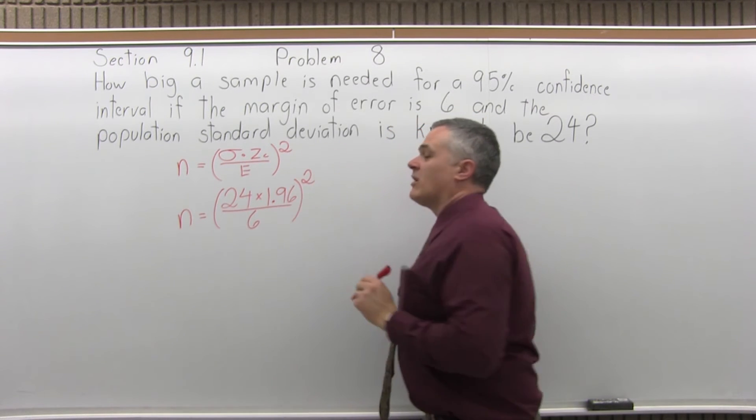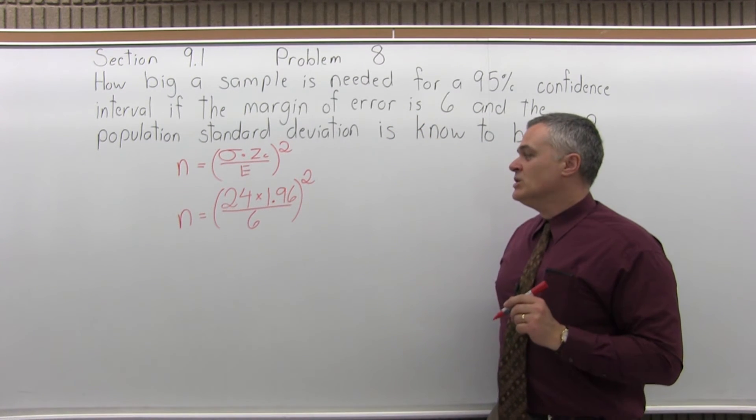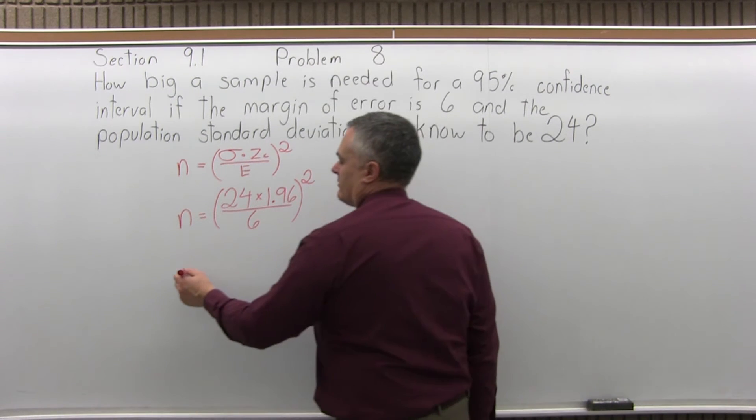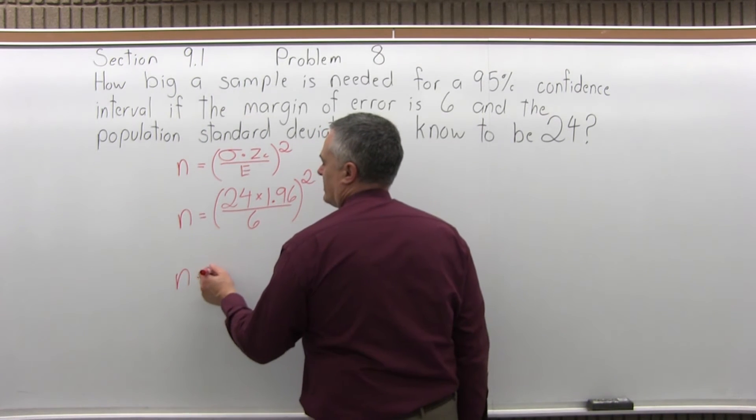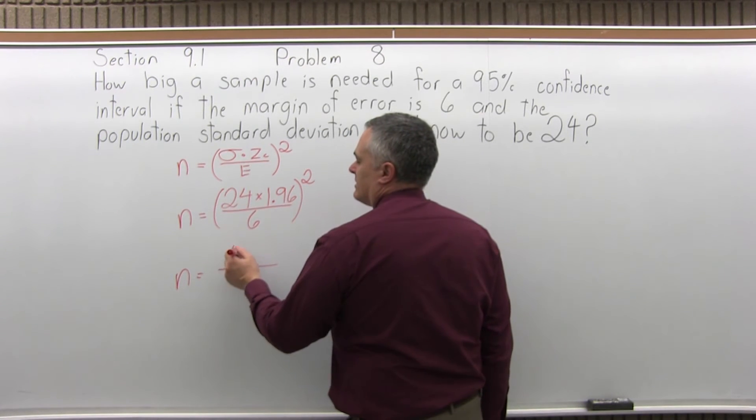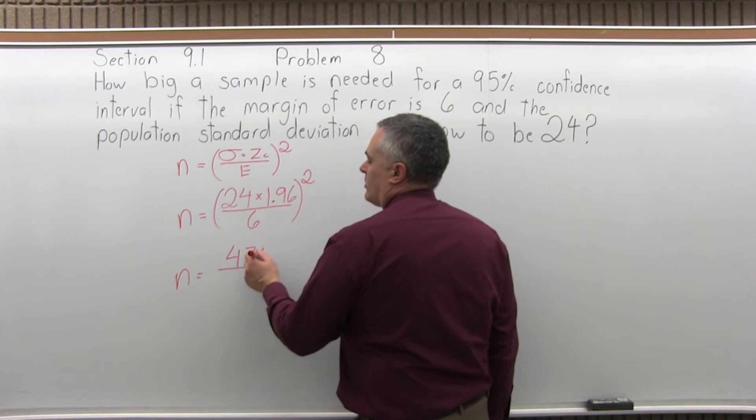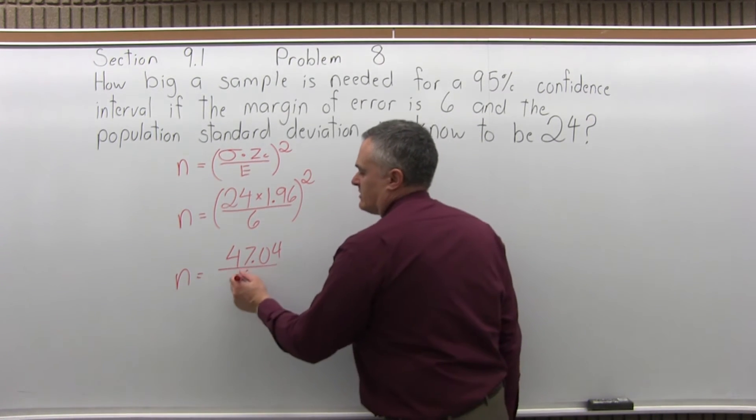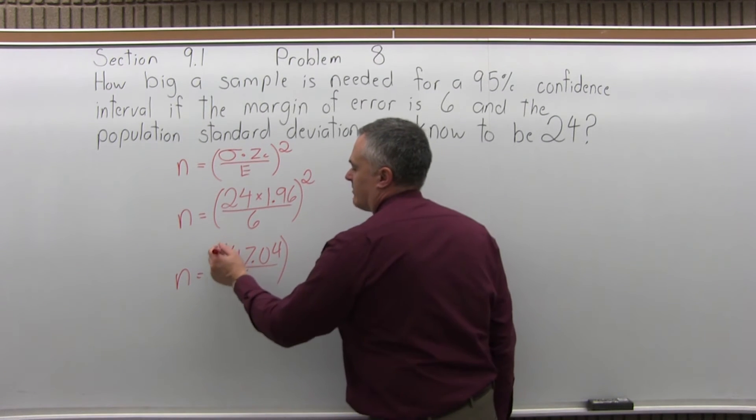Don't forget the second power, a very common mistake. So now to do this, you can do the multiply and divide in a variety of orders. A lot of people just take their calculator and multiply going across the top. 24 times 1.96 will be 47.04. And you still have a 6 underneath. Don't forget the second power.